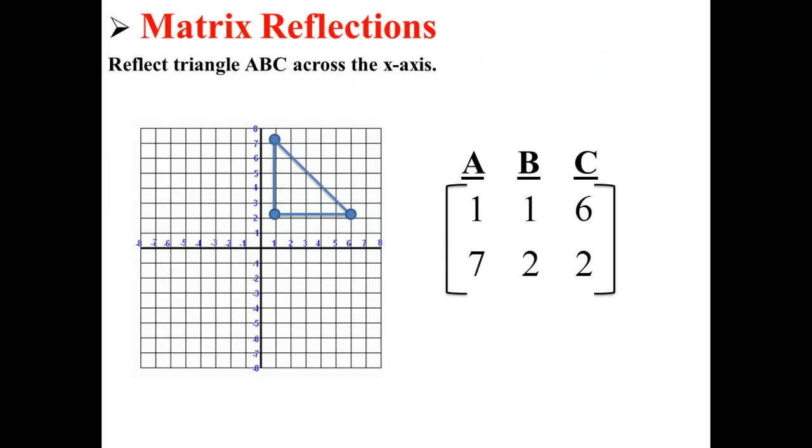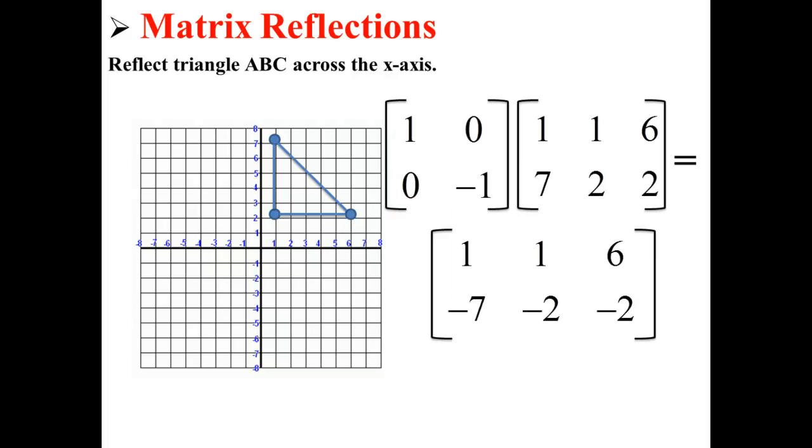Let's say that we want to reflect triangle ABC across the x-axis. We multiply it by this matrix to get our new matrix. Our new matrix is the points (1, -7), (1, -2), and (6, -2).